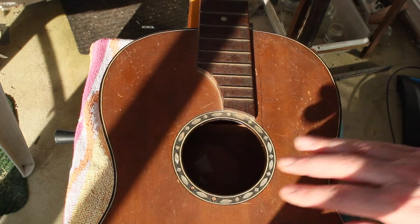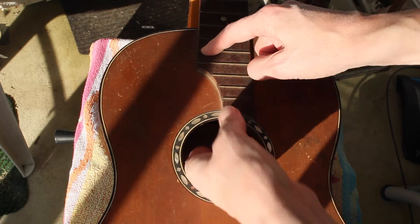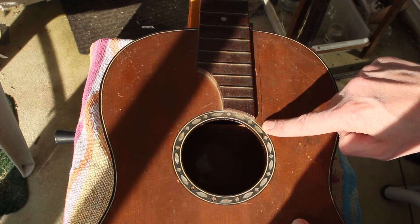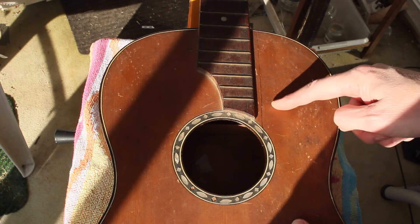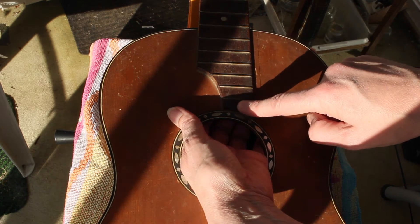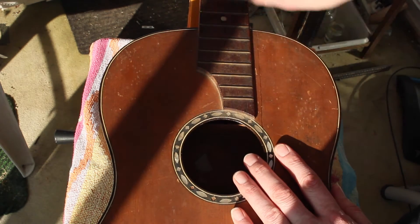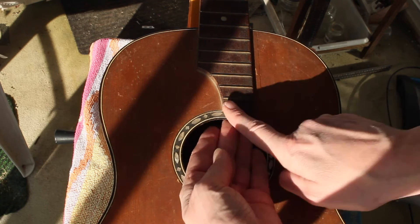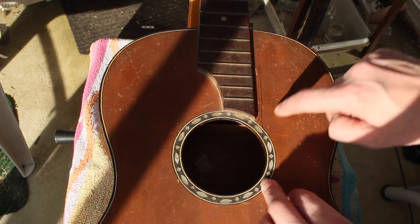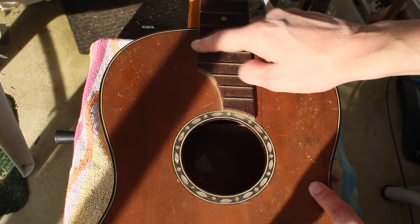The first task with this guitar is going to be to re-glue the braces. There are two braces here and here, and they're the reason that this crack has appeared. The braces are still glued on this side, but the soundboard has come unglued from the braces on this side, and so the action of the neck has pulled the soundboard up and cracked right through the rosette and right through the soundboard. So there's no point in me trying to fix the crack in the soundboard until I've re-glued the braces.